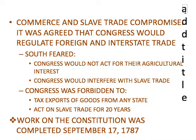They also had the Commerce and Slave Trade Compromise. Congress would regulate foreign and interstate trade. The South feared their agricultural system would suffer and that Congress would interfere with the slave trade. With the Commerce and Slave Trade Compromise, Congress could not tax exports of goods from any state, and they would not discuss the slave trade for another 20 years.